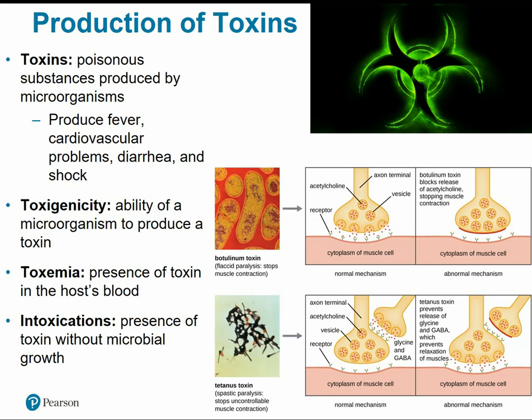Tetanus toxin is the opposite — instead of causing paralysis, it causes uncontrollable or excessive muscle contraction. Normally, inhibitory neurotransmitters stop muscle contraction. Tetanus toxin blocks those inhibitory neurotransmitters, so there's a constant influx of stimulatory acetylcholine — the muscle cell keeps getting signals to contract and never gets to relax.